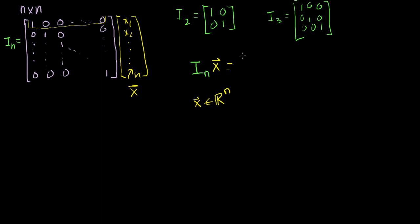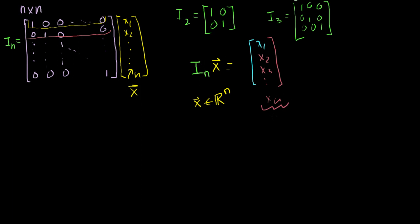So you're going to get another vector in Rn. The first term is that row dotted with the column, and you just get x1. The next entry is 0 times x1 plus 1 times x2 plus 0 times everything else, so the only non-zero term is the 1 times x2 — you get x2. You keep doing that: you get x3, because the only non-zero term is the third one. And you go all the way down until you get xn. But what is this thing equal to? This is just equal to x. So the identity matrix times any vector in Rn is equal to that vector again.